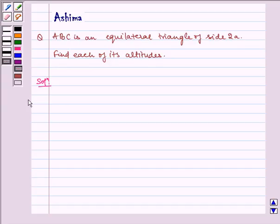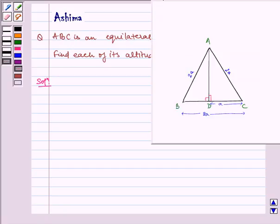Before starting with the solution, let us draw an equilateral triangle ABC of side 2A units where AD is perpendicular to BC. Here is a triangle ABC with each of its sides as 2A and AD is perpendicular to BC.